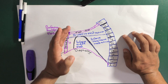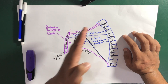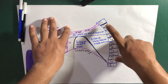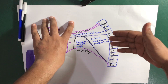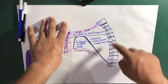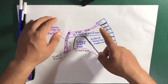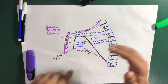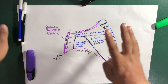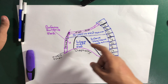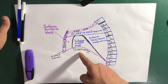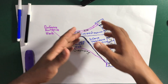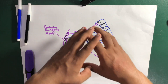The boundaries of the mediastinum are as follows: anteriorly, the boundary is the sternum. The posterior boundary is all 12 thoracic vertebrae. The superior boundary extends from the jugular notch to the upper limit of T1. The inferior boundary is formed by the diaphragm. So there are four boundaries: anteriorly the sternum, inferiorly the diaphragm, superiorly the jugular notch, and posteriorly the thoracic vertebrae.